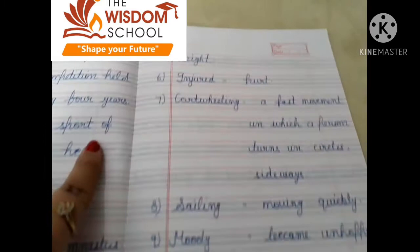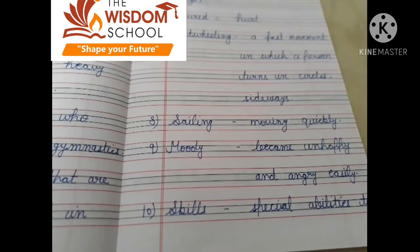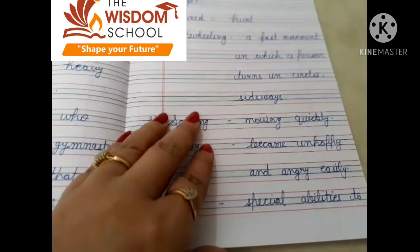Sailing — moving quickly — quickly move करना। Moody — become unhappy and angry easily — जल्दी unhappy or angry हो जाना। Skills — special ability to do certain things — certain things को करने की special ability होती है।